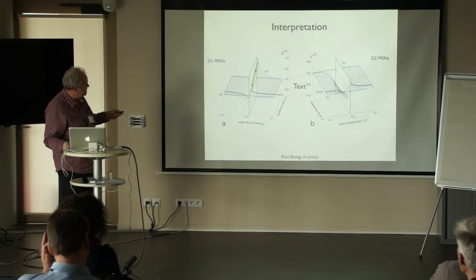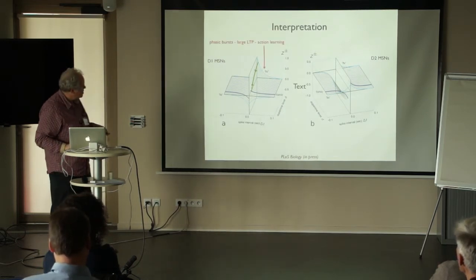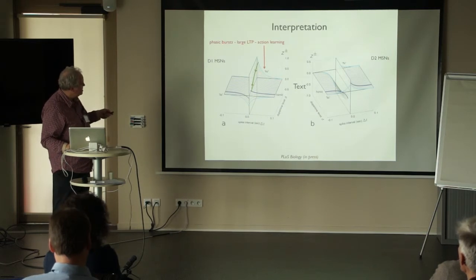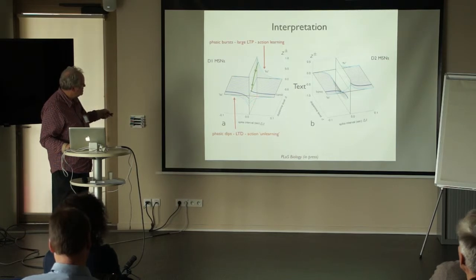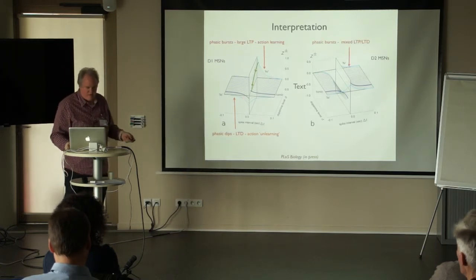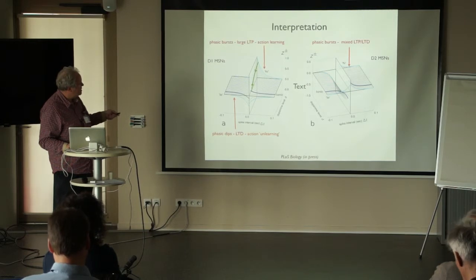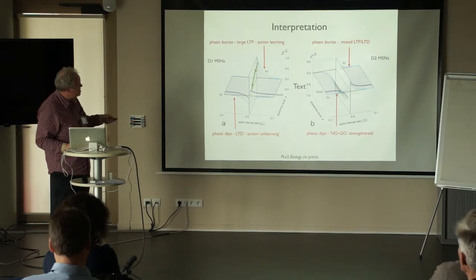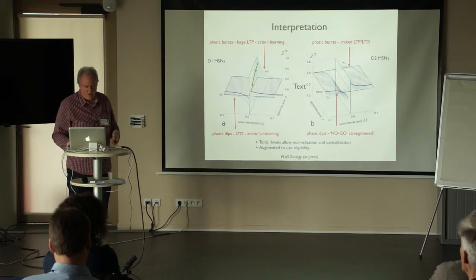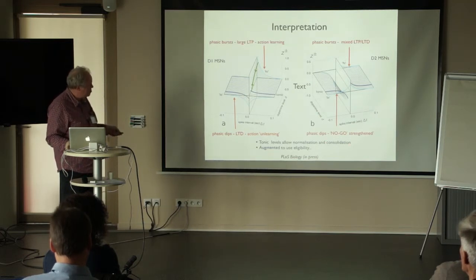The interpretation goes something like this: when you have phasic bursts of dopamine in D1 neurons, you get large LTP — action learning at the behavioural level. In contrast, when you have dopamine dips, you want to try and undo what you did earlier, so you have action unlearning. For D2 neurons, you get a mixed, somewhat classic textbook response, which to cut a long story short does help selection in our basal ganglia model. When you have phasic dips, you want the no-go pathway to be strengthened, which is what you get reliably irrespective of the STDP timing. Tonic levels allow normalisation and consolidation of the plasticity, as they normally do.